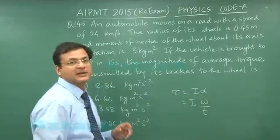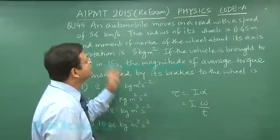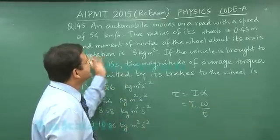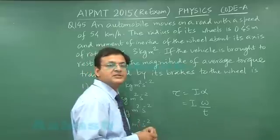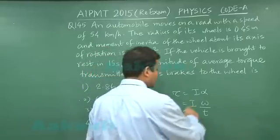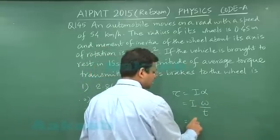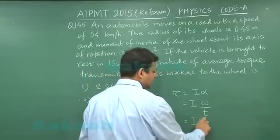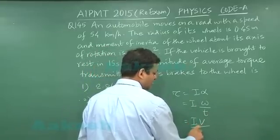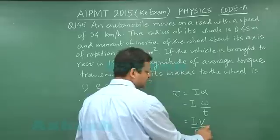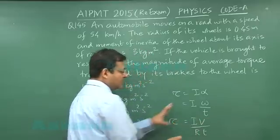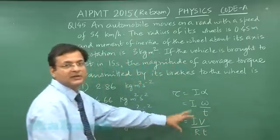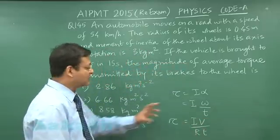They have not given the angular speed; rather, they have given the linear speed and radius. You know that v = ωr, so you can modify the expression as v divided by r, giving torque as I × (Δv/r) / t.